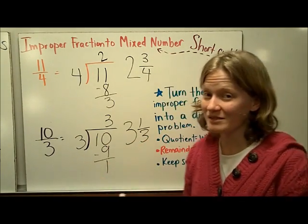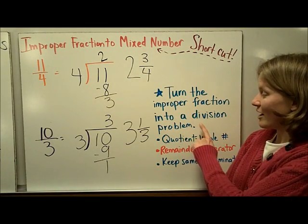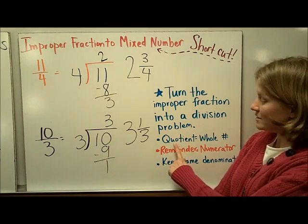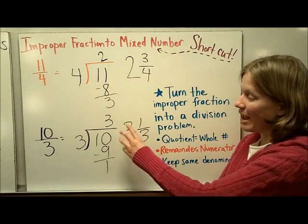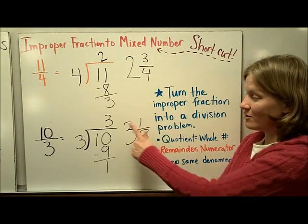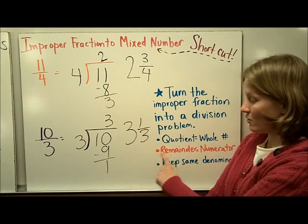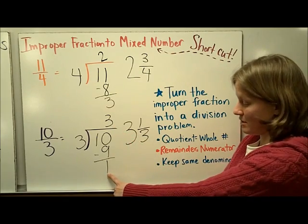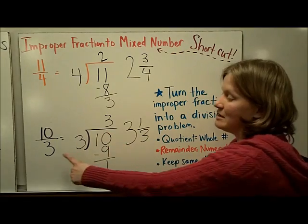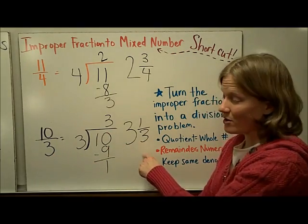To summarize the steps: turn the improper fraction into a division problem. Your quotient becomes the whole number, your remainder becomes your numerator, and the denominator stays the same as it already was.